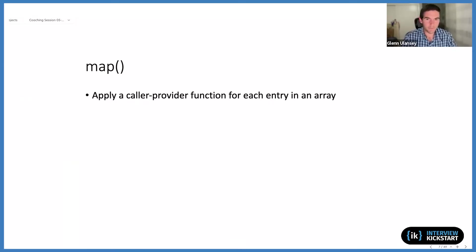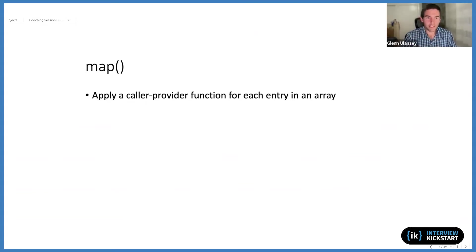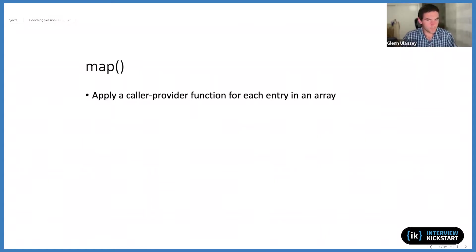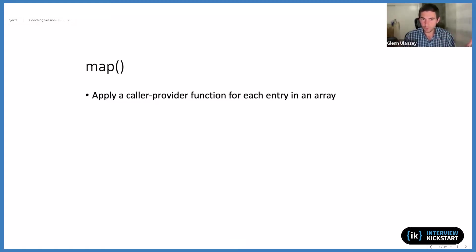For those familiar with scripting languages, this sort of thing might already be built into the language or standard library. But in the C world, nothing like this exists. What we're trying to do is apply a caller-provided function for each entry in an array. Let me first show you what I'm trying to do and then we can talk about how it might be implemented.